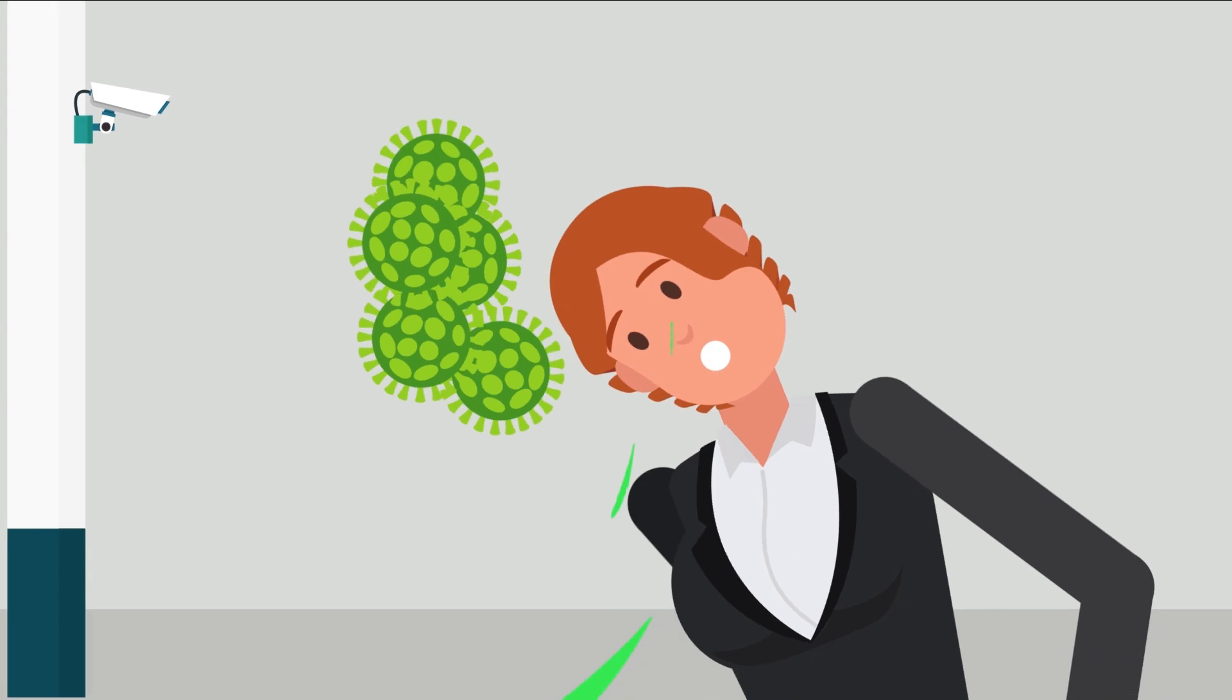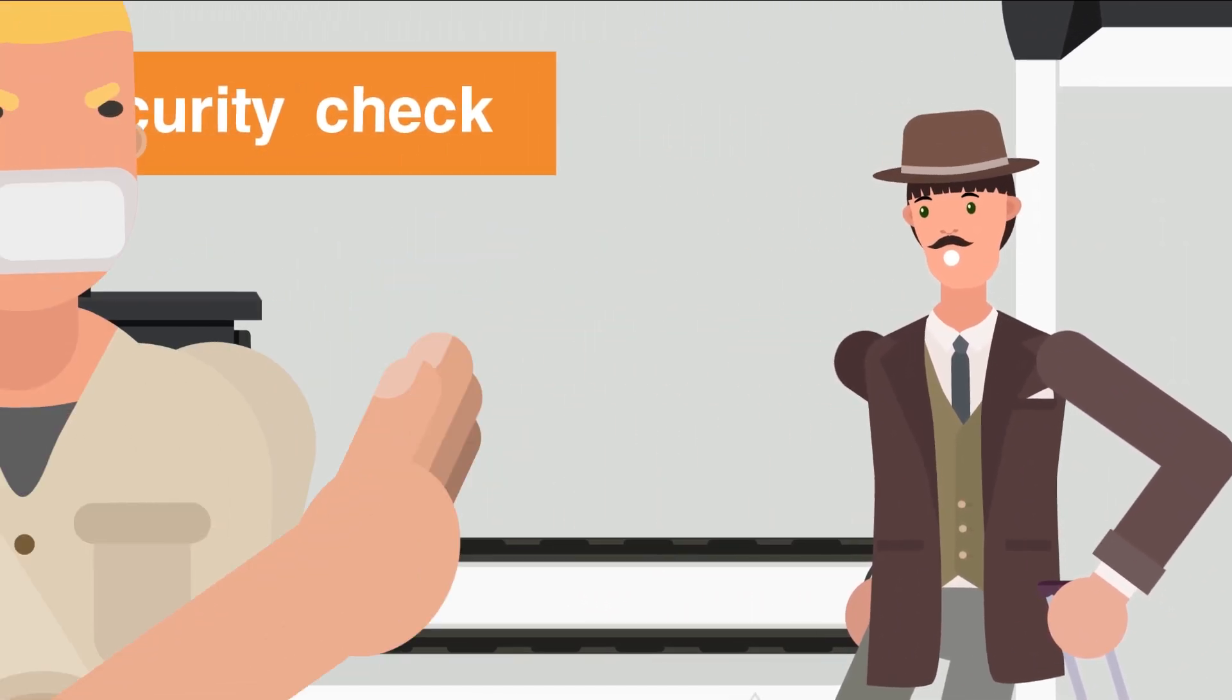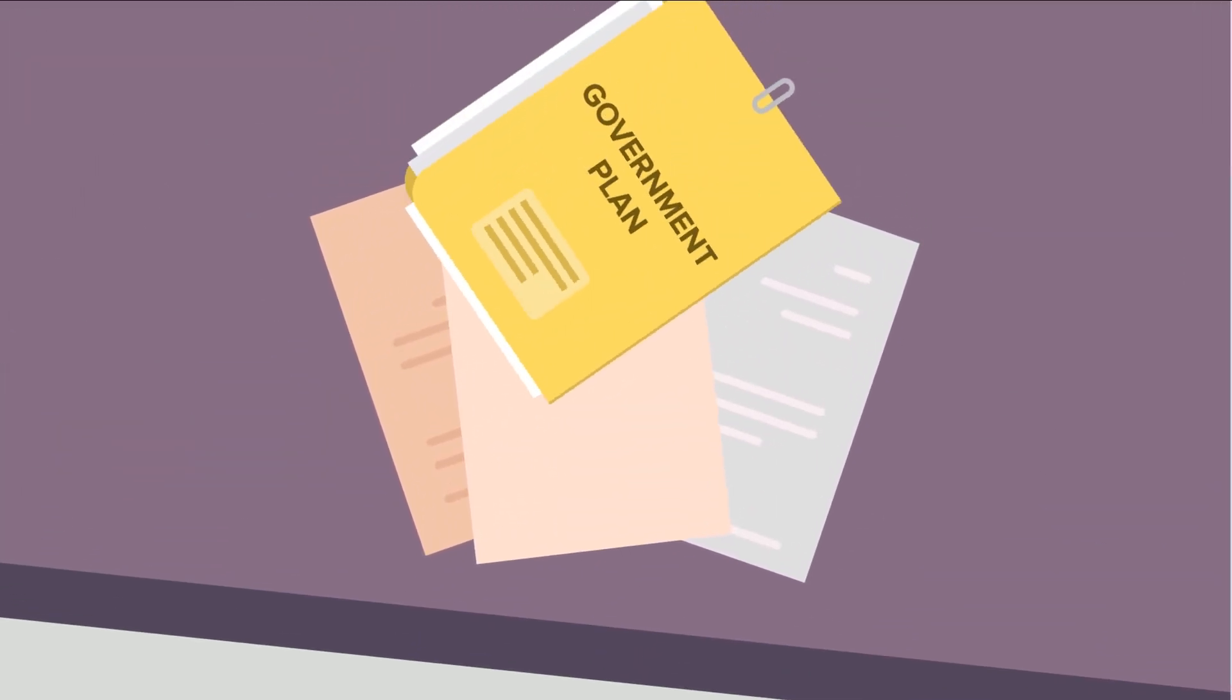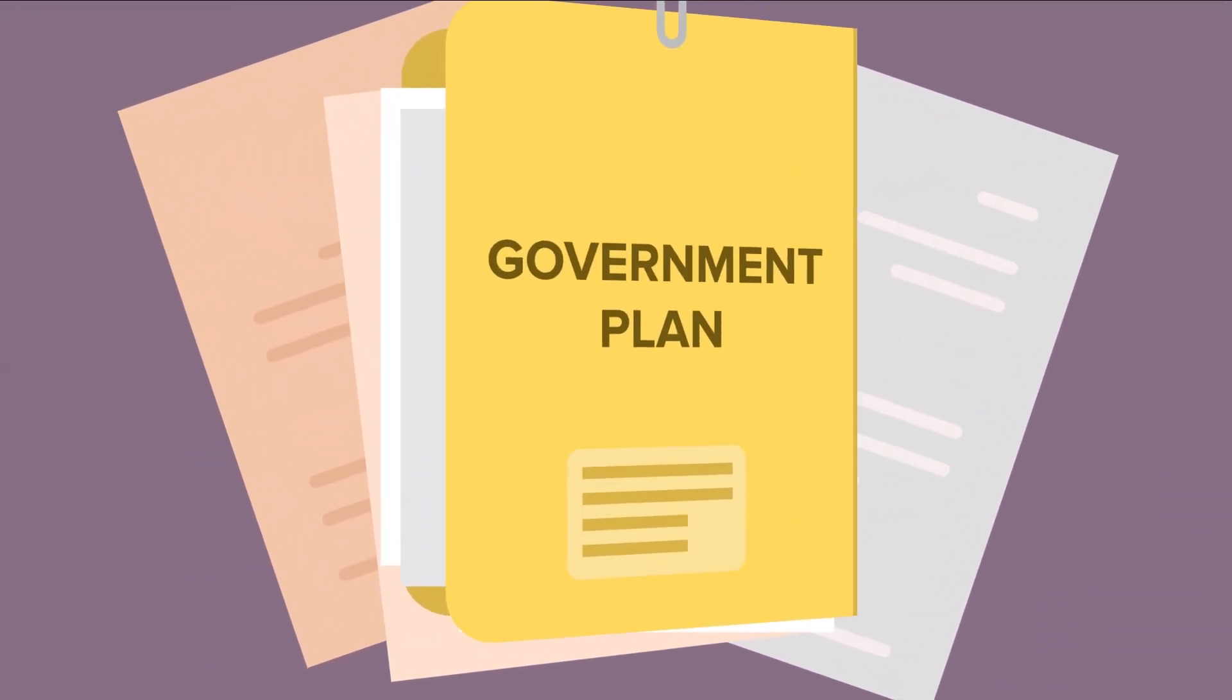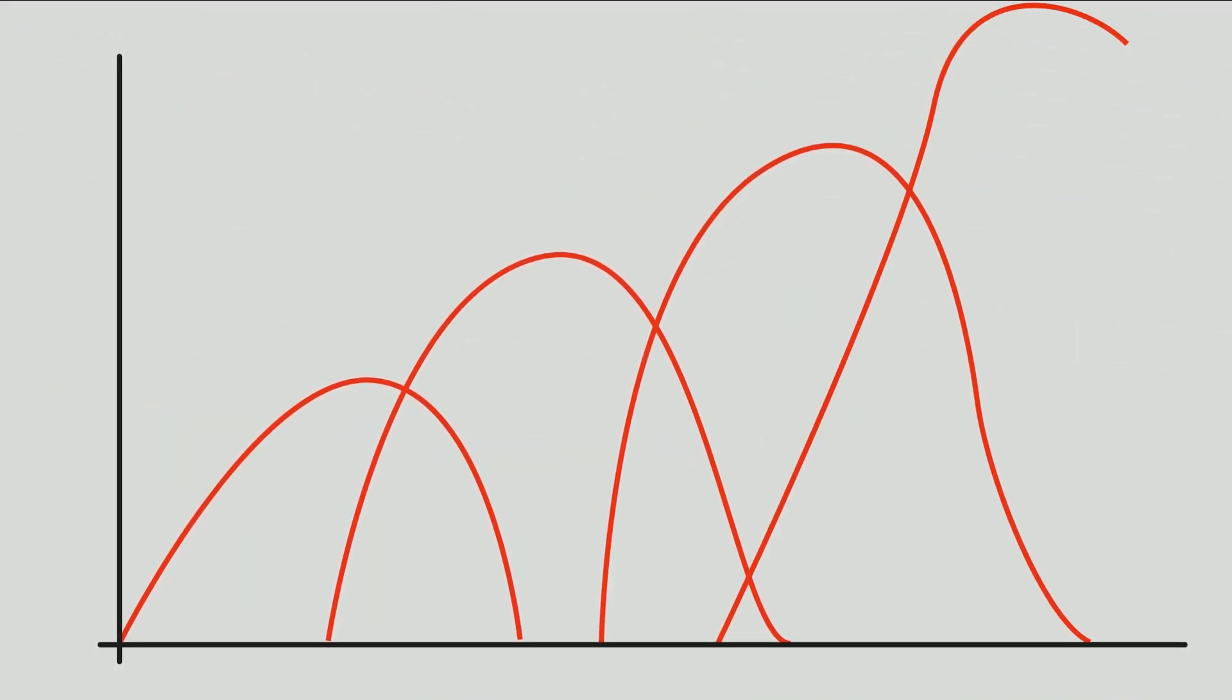In the wake of increasing case numbers and skyrocketing COVID-19 deaths, countries have ramped up their quarantine and safety measures across the planet. On March 17, a leaked government plan revealed the possibility that the pandemic could potentially last as long as 18 months, and come in multiple waves rather than being a single linear progression.